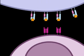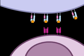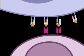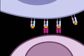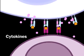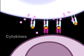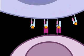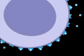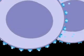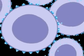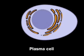If an activated helper T cell has the same specificity as the B cell, it can dock with the B cell and assist it by releasing cytokines. The cytokines trigger the B cell to divide, producing a clone of cells that differentiate into plasma cells.